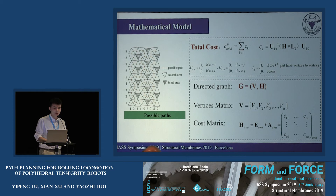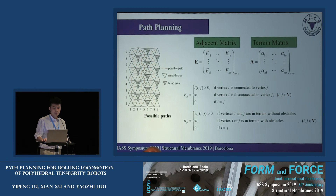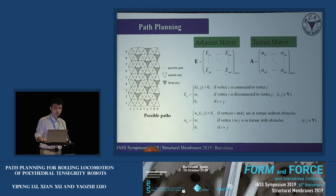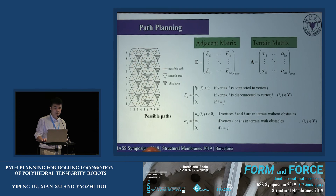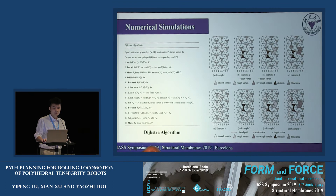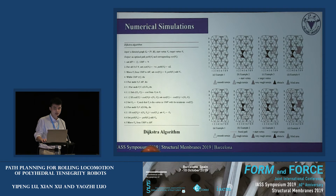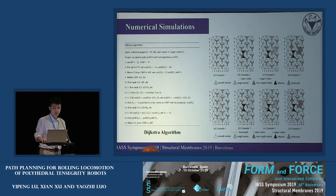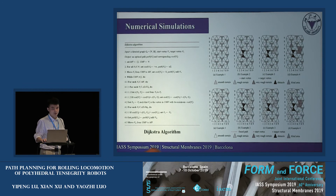The possible paths graph is further modelled as a directed graph. The components of the adjacency matrix E are determined by the length of the edges, and the components of the terrain matrix A are determined by the terrain. Given the directed graph, the start vertex V_S and target vertex V_T, the locomotion path with the lowest cost can be found by Dijkstra's algorithm. The flow of the algorithm is outlined on the screen.